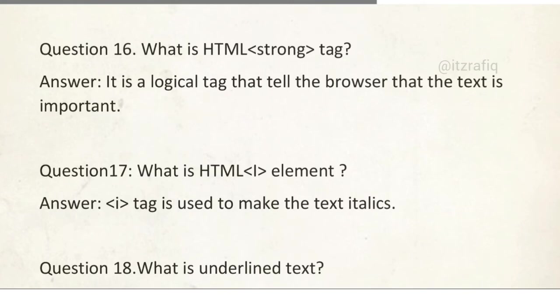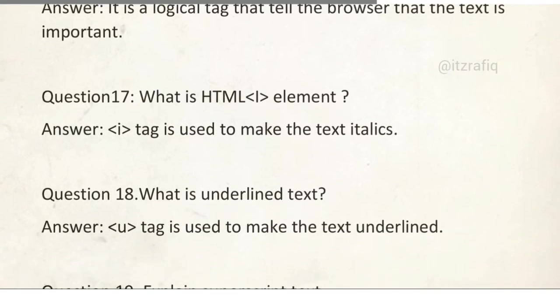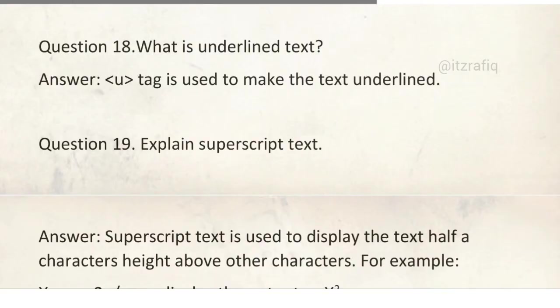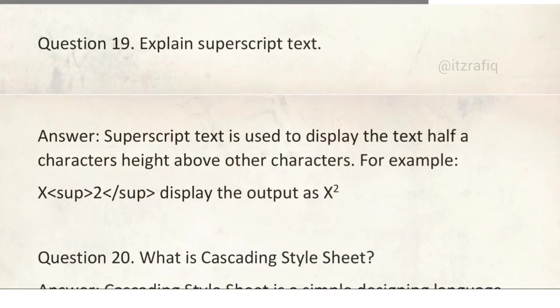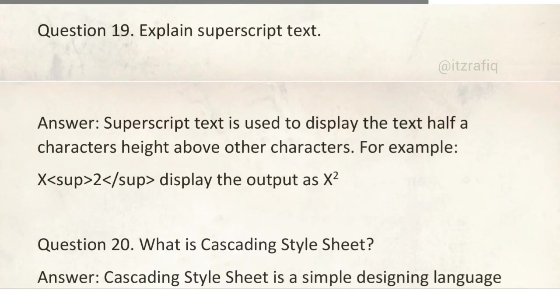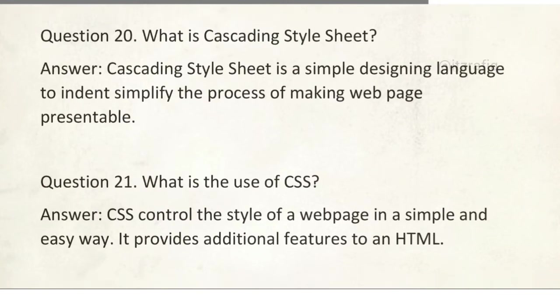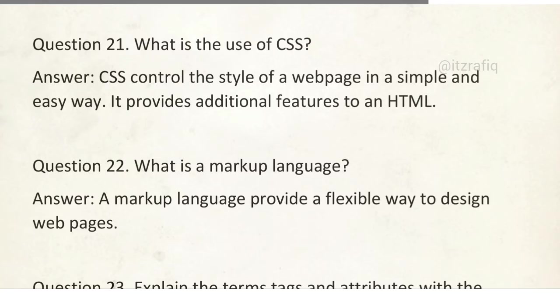Number 15: What is the use of logical tag? Logical tags are used to apply formatting style to the text according to their meaning. A few logical tags are EM, CITE. What is HTML strong tag? This is a logical tag. They tell the browser that the text is important. What is the use of I element? It is used to write text in italics. What is the use of underlined text? It is used to make the text underlined. Explain superscript and subscript. The definitions will be similar. Just in superscript we write height above and subscript you will write height below.